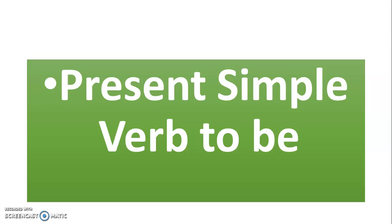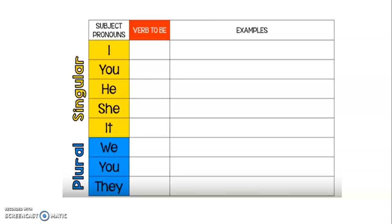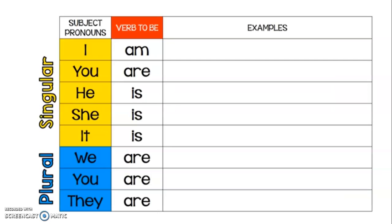Hi class, how are you today? We are learning about the verb to be. We are going to review the positive and negative form of this tense. With the present simple of the verb to be, let's start by reviewing the subject pronouns. We have singular and plural forms. The singular ones are I, you, he, she, and it. In blue we have the plural ones: we, you, they.